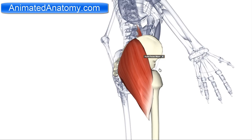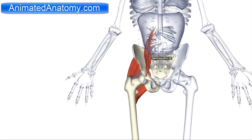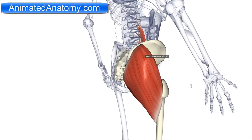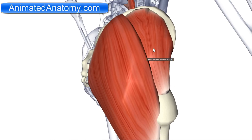The antagonists of this muscle have already been explained. It is the psoas major muscle and the psoas minor muscle. Now let's get back to our gluteal region here. We have here one muscle called the gluteus medius muscle. And the gluteus medius is a little bit covered by the gluteus maximus.